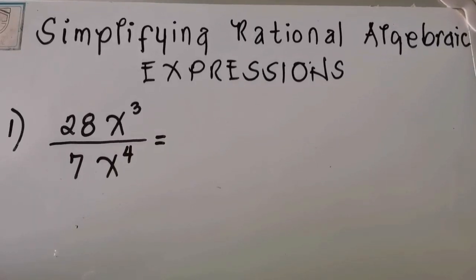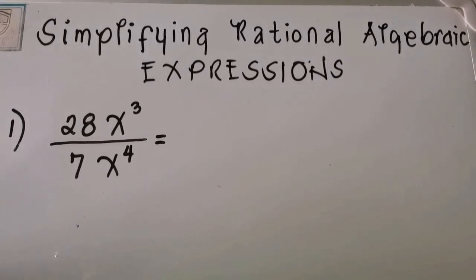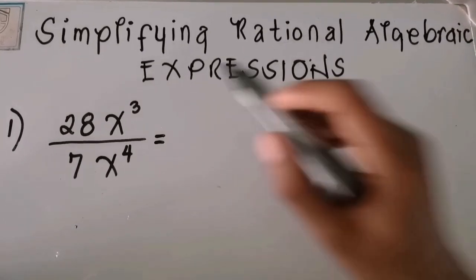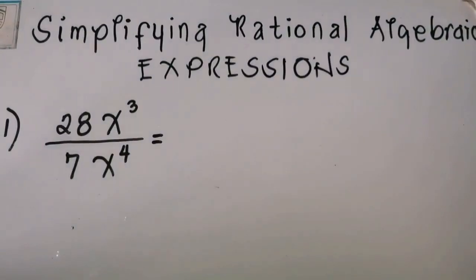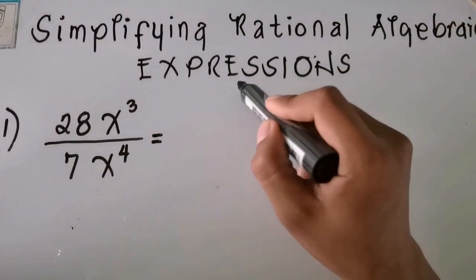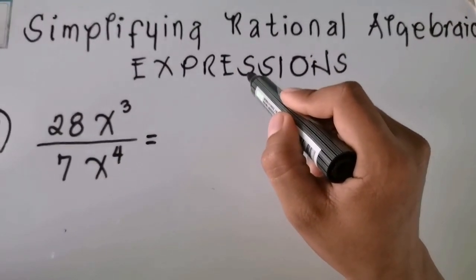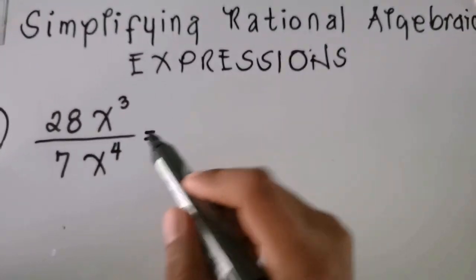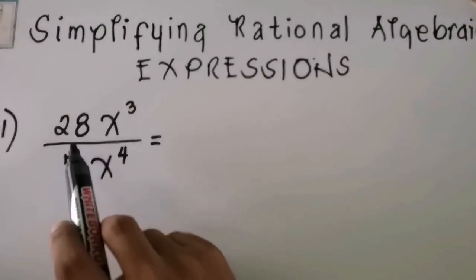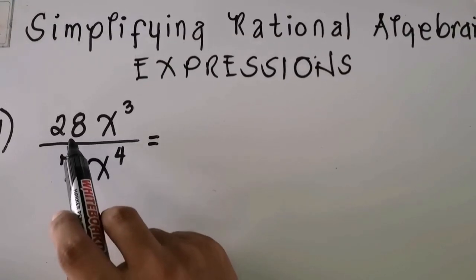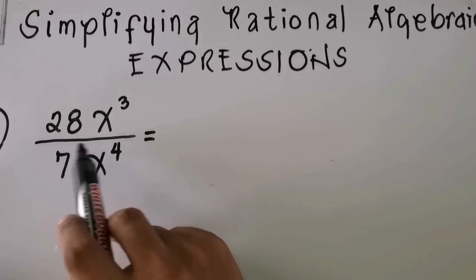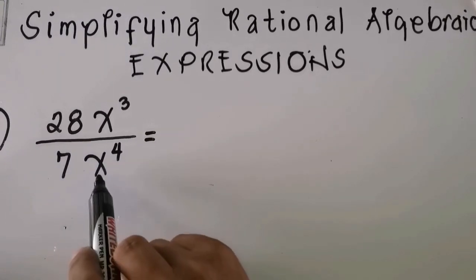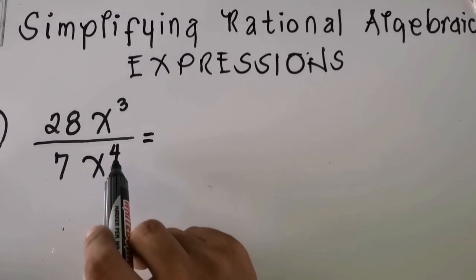Hello learners, this time I will teach you how to simplify rational algebraic expressions. I will give you three examples. The first example is 28x cubed divided by 7x to the fourth power.